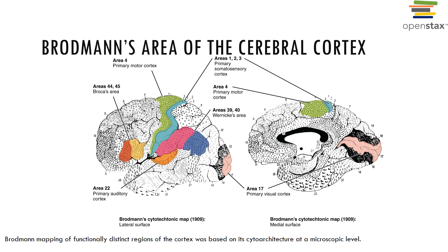The cerebral cortex is the gray matter of the cerebrum and is responsible for all qualities associated with consciousness. Each hemisphere is concerned with the sensory and motor functions of the opposite sides of the body — a contralateral function. Even though symmetrical in structure, the two hemispheres are not equal in function.